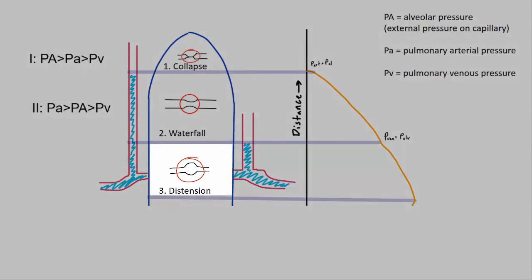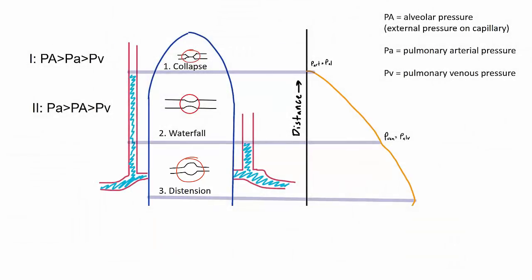Zone three is where alveolar pressure is minimal compared to pressures in the blood vessel. Pulmonary arterial pressure > pulmonary venous pressure, and both are greater than alveolar pressure. In this case, there is no compression of the blood vessel from the alveolus, and blood flow is purely determined by pulmonary arterial pressure and pulmonary venous pressure.